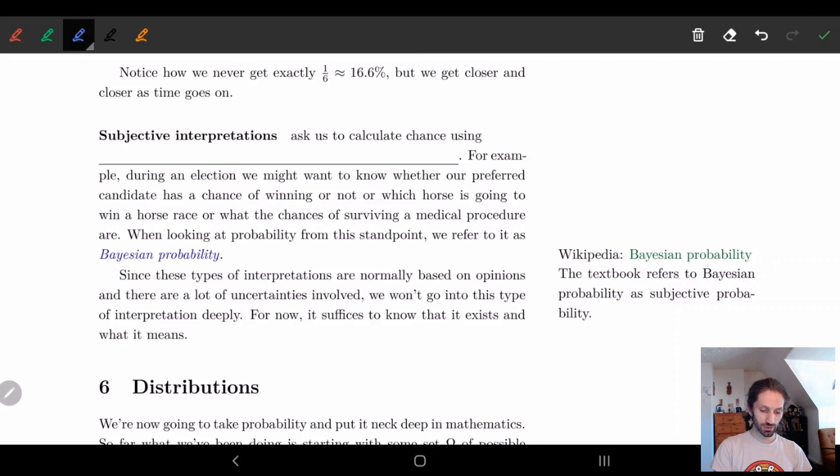So subjective interpretations are basically the opposite of frequency interpretations. They're when we look at calculating chance when using opinions or non-hard evidence. So basically these are things like, who's going to win the election, right? Yeah, we have polls, but they're not hard evidence, right? We don't have full information. We didn't actually do the election.